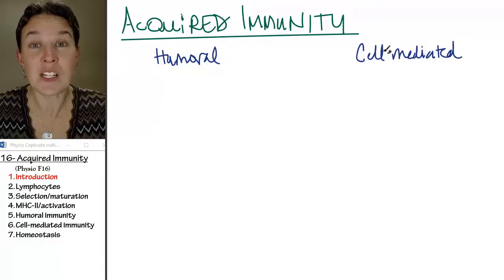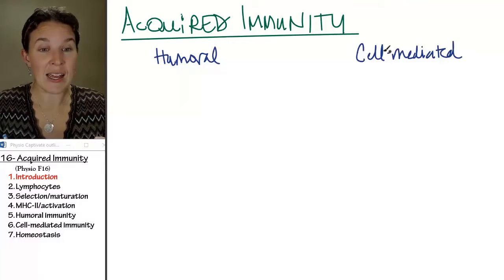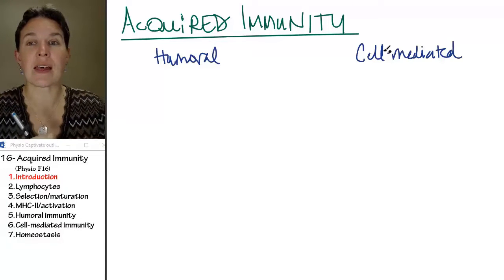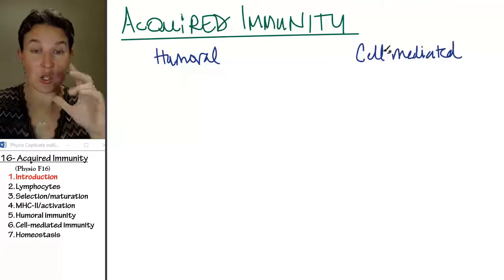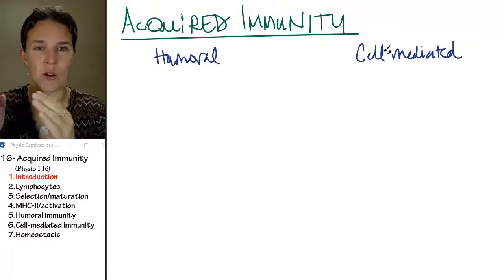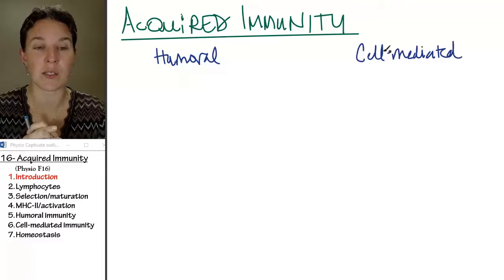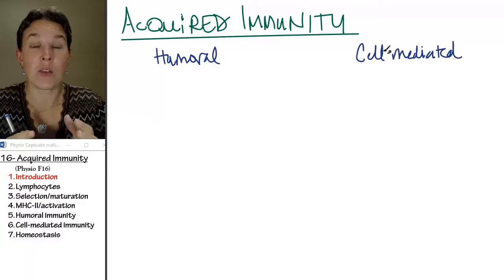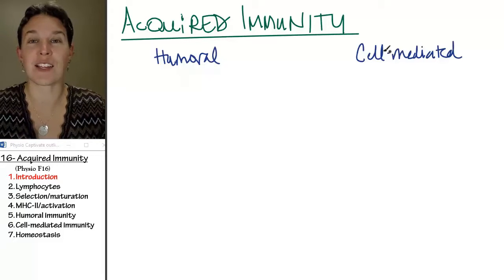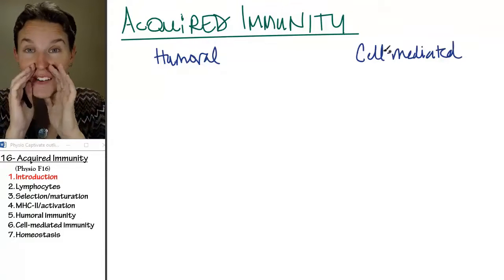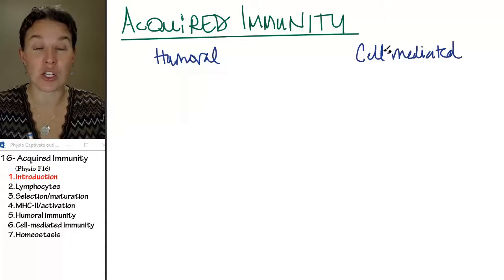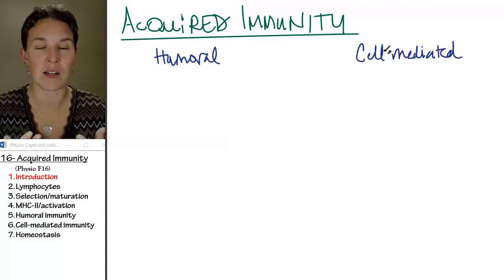So the first thing that we're going to do is we're going to look at three sections, three factors where we're going to look at our two branches side by side. So we're going to look at the lymphocytes, and we're going to compare the lymphocytes that are involved in the humoral immune response to the lymphocytes that are involved in the cell mediated response. Then we're going to look at how the lymphocytes are educated, how they go through their maturation process. They do go to school, and not very many of them graduate.